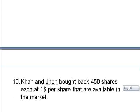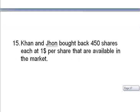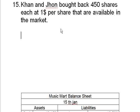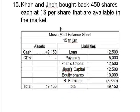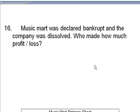Transaction 15: Khan and John bought back 450 shares each at $1 per share, since that is the current market price. But since Khan and John are buying shares in the market, this has nothing to do with MusicMart itself — there is again no change in the company's balance sheet. Khan's capital remains $12,500 and John's capital stays the same. The equity shares are still worth $10,000 as book value, even though market price is only $1.